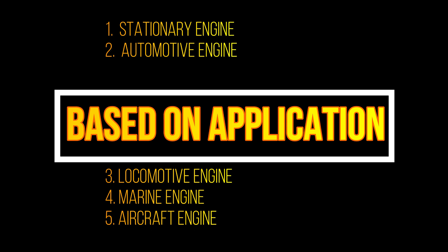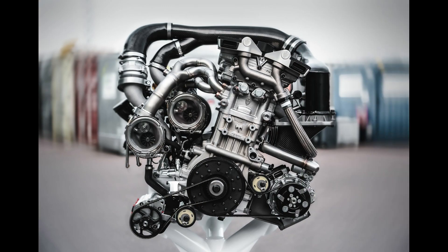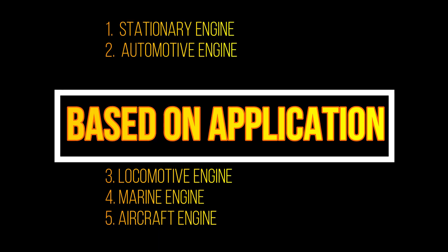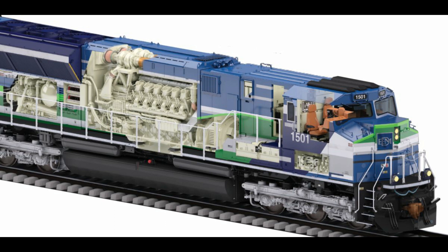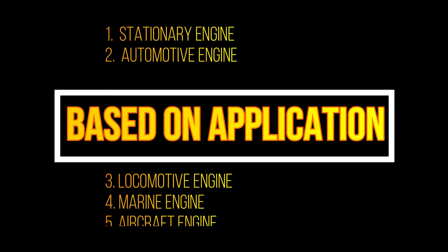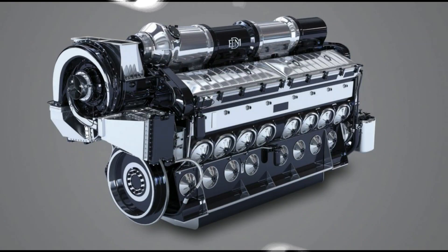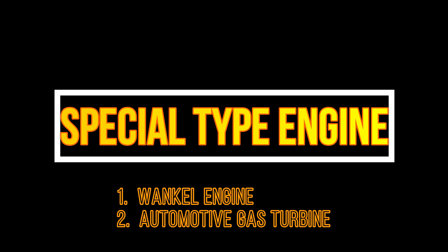Classification by application and speed: stationary engines are fixed in the lab. Automotive engines — very familiar — include bikes, cars, and automobiles. Locomotive engines are used in trains. Marine engines are used in ships. Aircraft engines are used in aircraft. The last one is special type engines — something special.